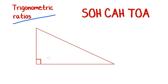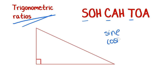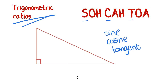Trigonometric ratios refers to the sine ratio, the cosine ratio, and the tangent ratio. When we have a right angle triangle, we can use sine, cosine, and tangent to figure out sometimes an angle within the triangle and sometimes a side of the triangle, if we're given enough other pieces of information.